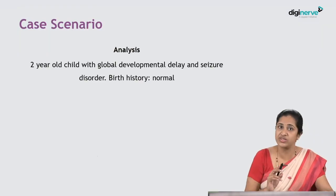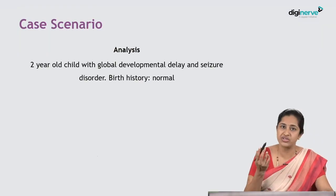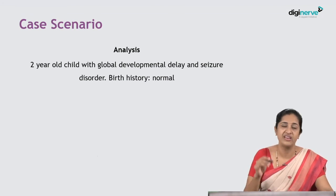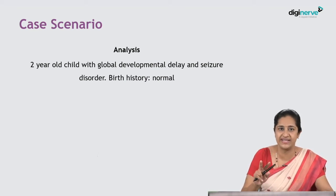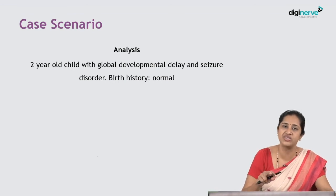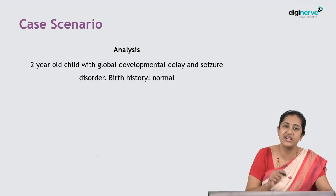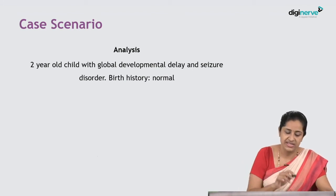This two-year-old child has global developmental delay because at two years, a child should be running and playing. At two years, a child should be able to imitate vertical and horizontal strokes. A two-year-old child should be able to say two-word sentences, and in the personal social domain, should be able to play alone in the house. This child is not able to do any of those things, so this child has global developmental delay and seizure disorder.